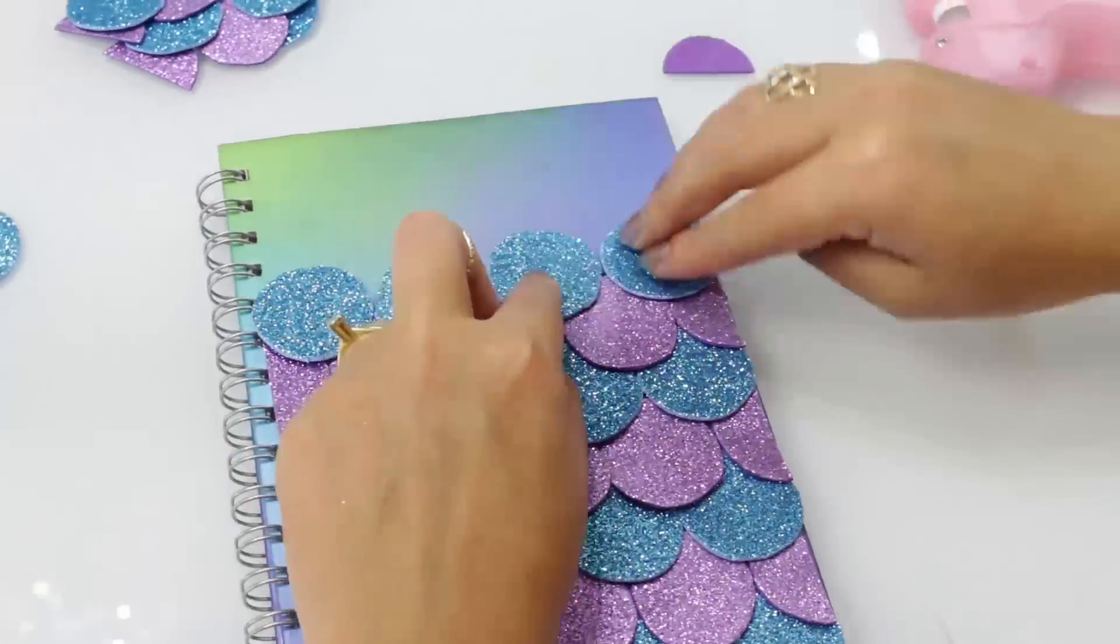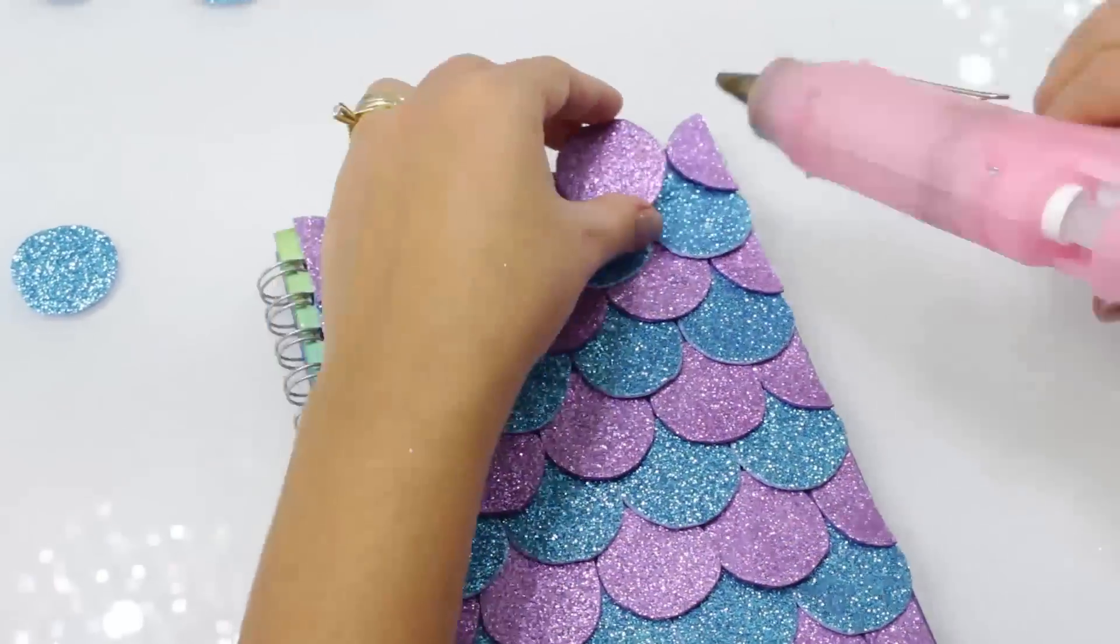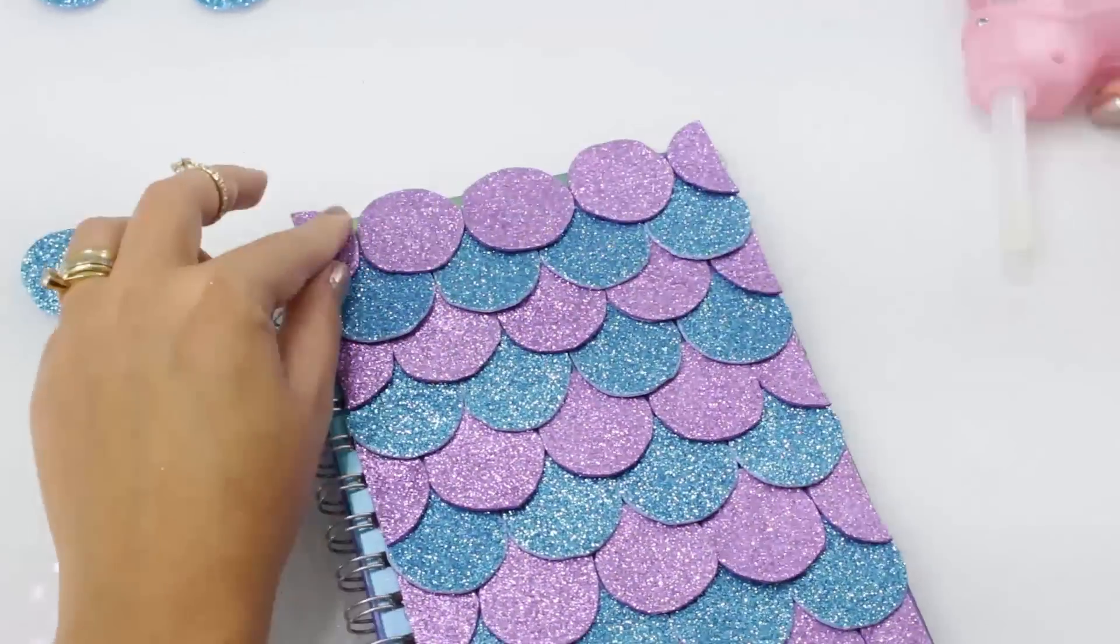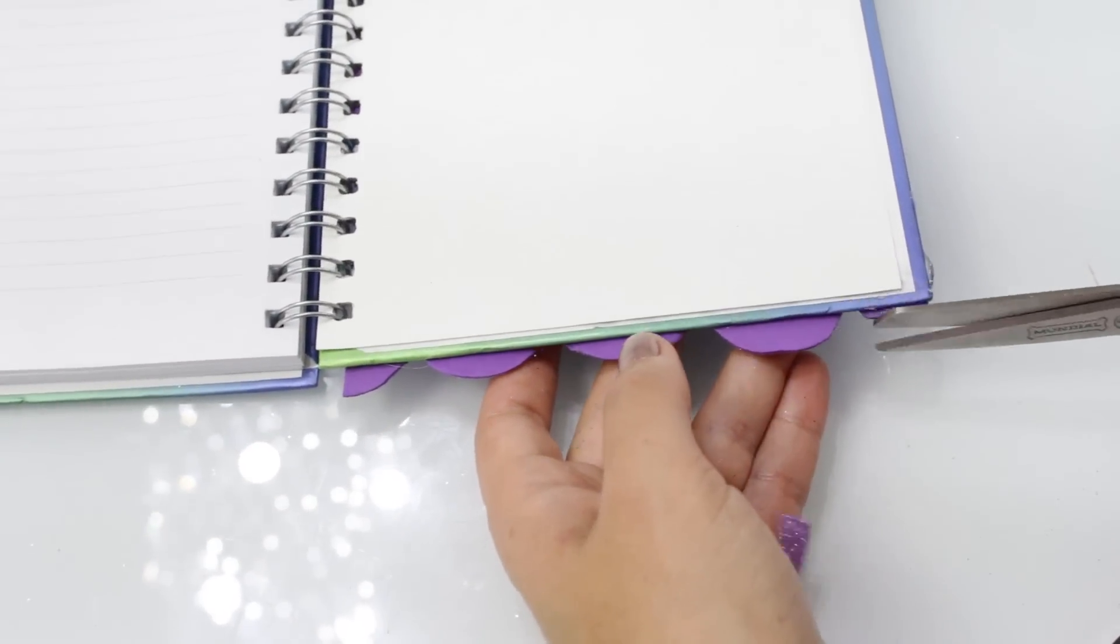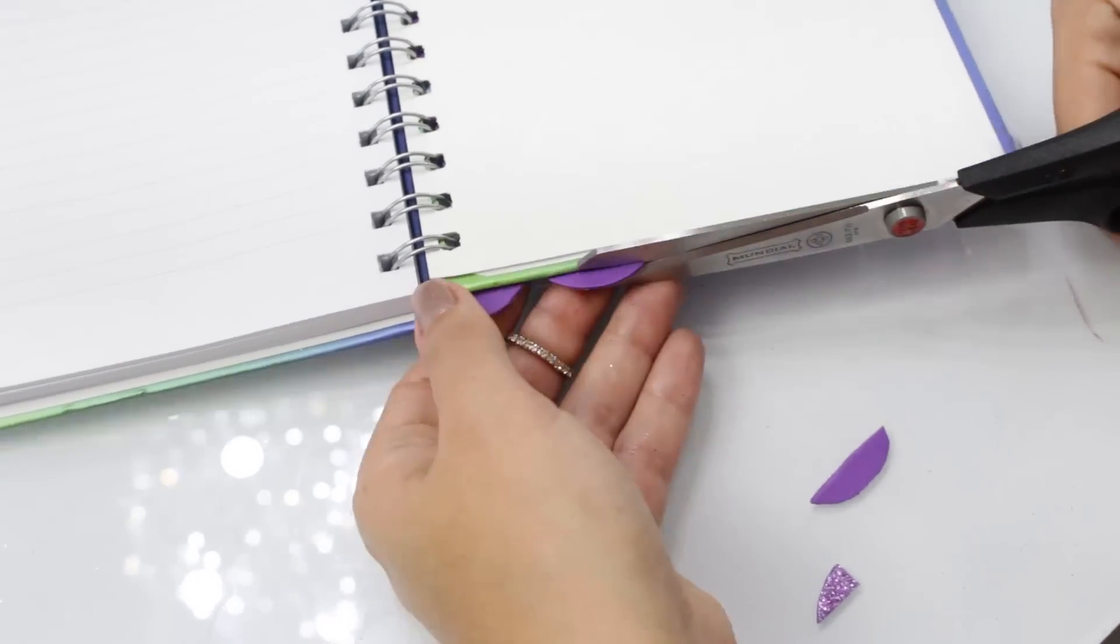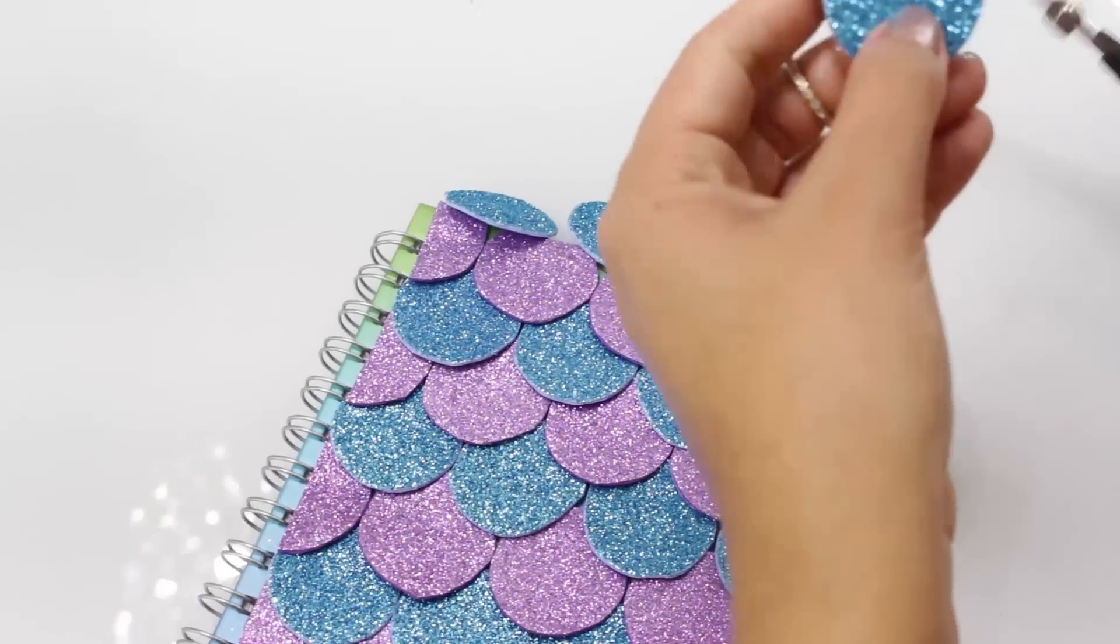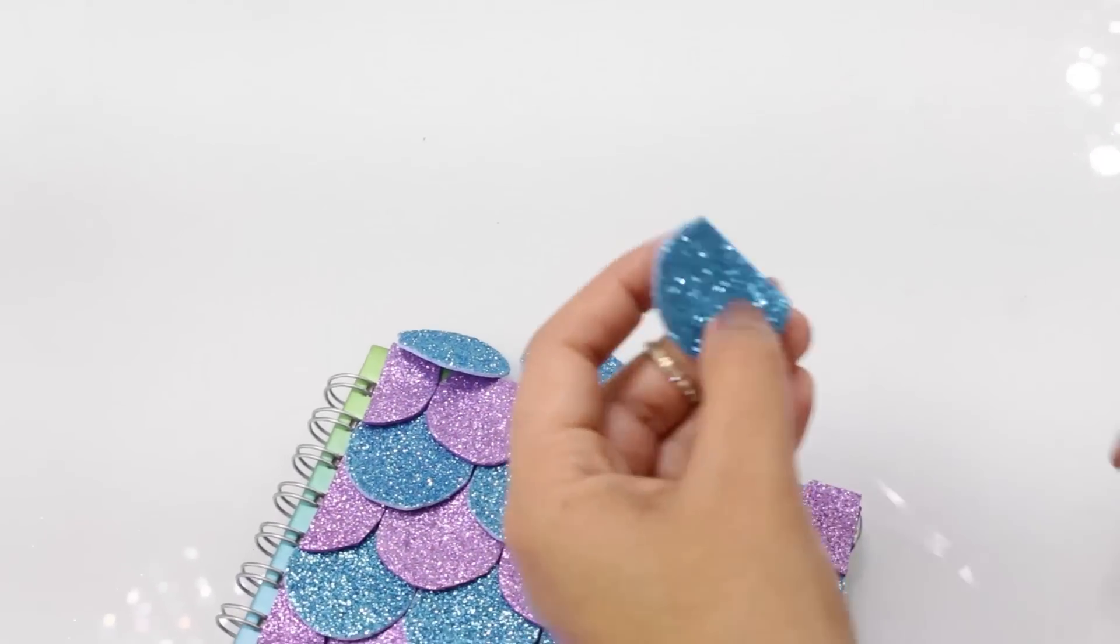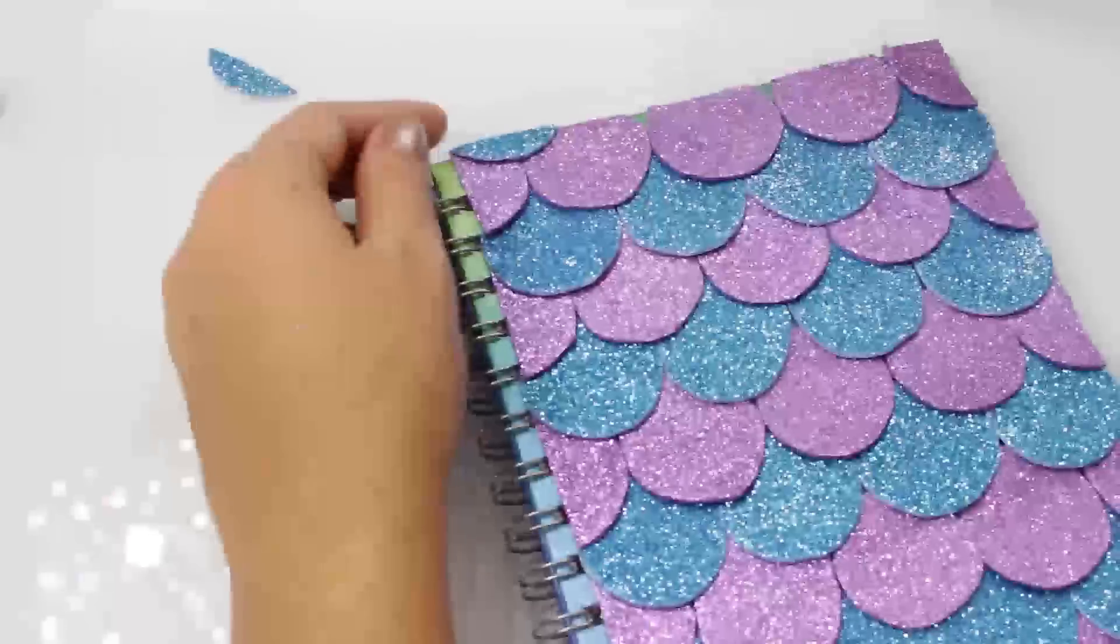E aí você vai preenchendo até a parte de cima do caderno. E aí quando você chega lá em cima, eu tirei o excesso das bolinhas lilás pra poder ficar realmente a parte certinha lá em cima do caderno. Só que mesmo assim ficou alguns buraquinhos verdes do caderno por baixo. Então o que eu fiz? Eu retirei normalmente o excesso lilás, mas aí sim eu vim com as outras bolinhas azuis e eu fui recortando pedacinhos só pra fazer o acabamento na parte de cima.